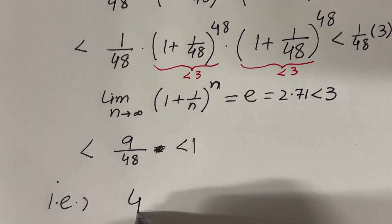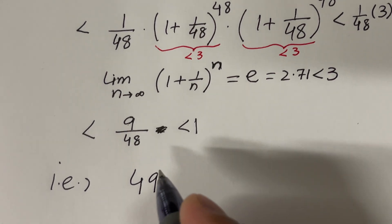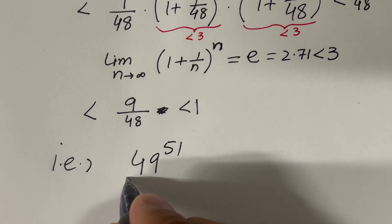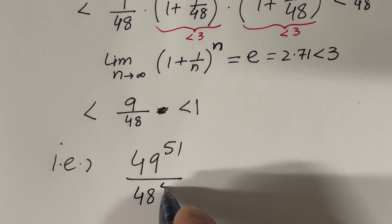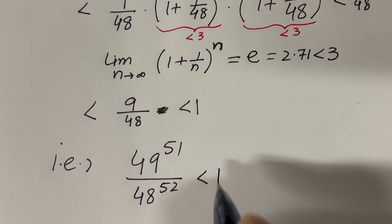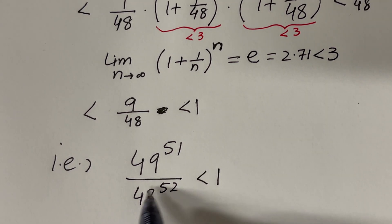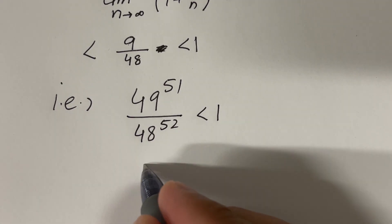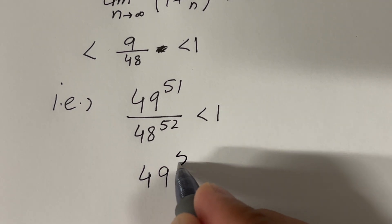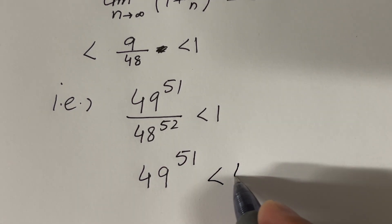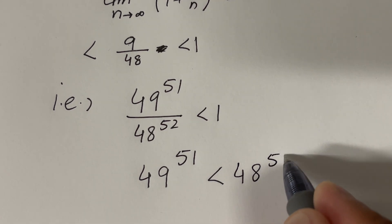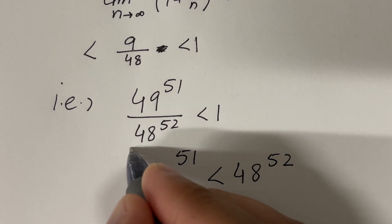So 49 raised to the power 51 divided by 48 raised to the power 52 is less than 1. Moving 48^52 to the other side, we conclude that 49 raised to the power 51 is less than 48 raised to the power 52.